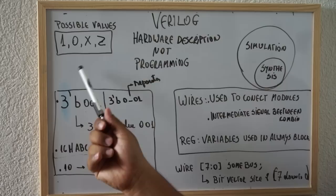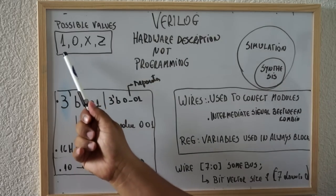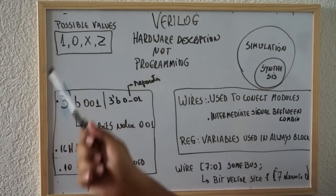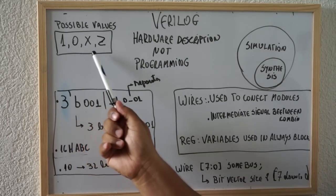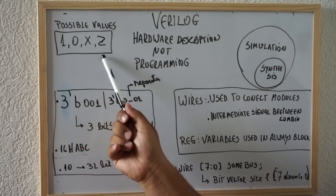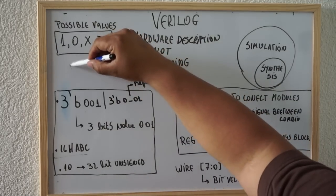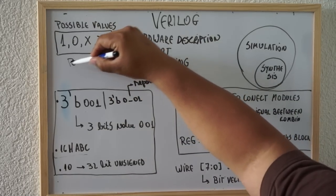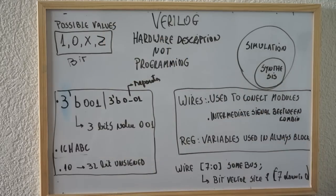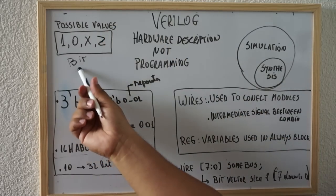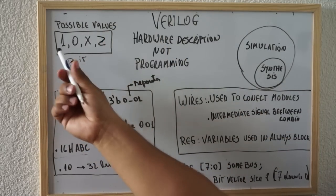The possible values that you can have in Verilog are 1, 0, X, and Z. These are the normal bit types in Verilog. The bit type can have only those values.